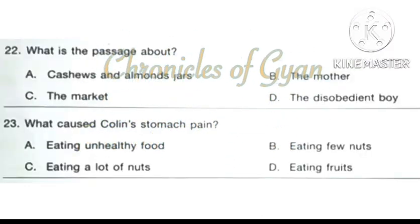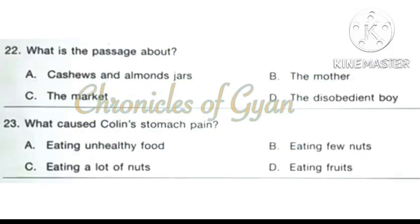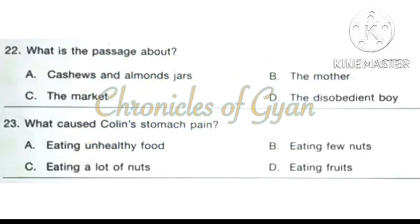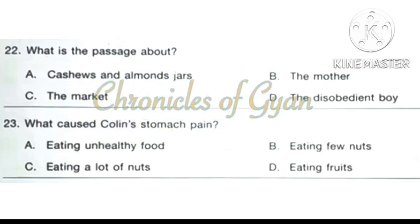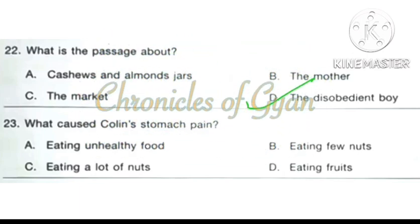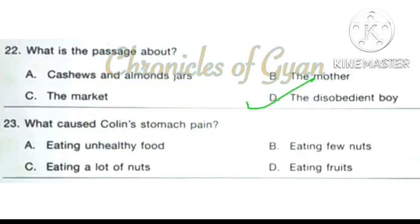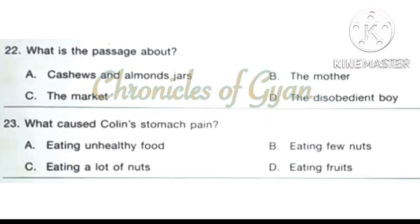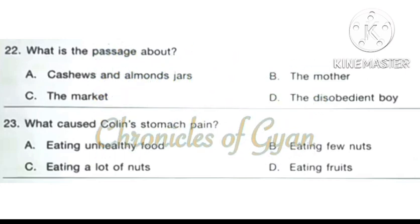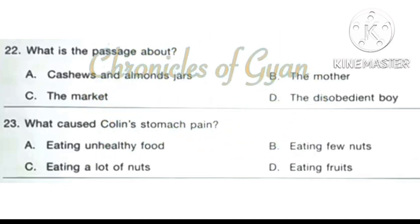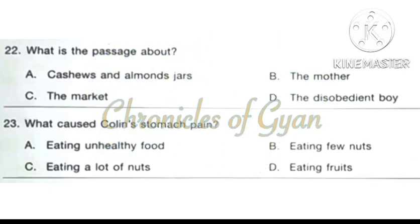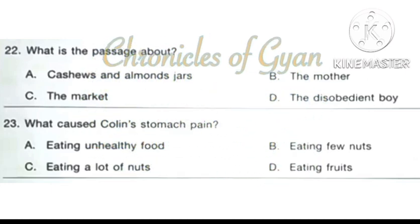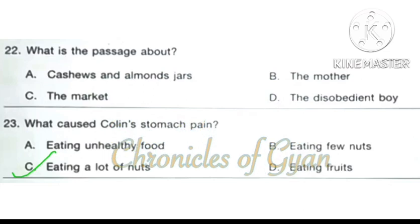Question 22: What is the passage about? The passage is about a disobedient boy. Question 23: What caused Colleen's stomach pain? The correct answer is option C: Eating a lot of nuts.